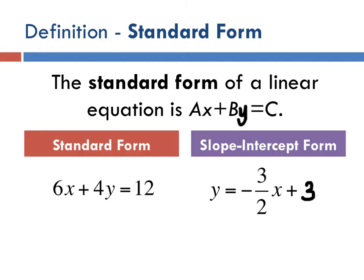If we look at this example, standard form is shown over here, slope-intercept form is shown over here. This is what we're used to, this is what we like because we have a slope right here and the intercept. This should all be review.